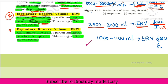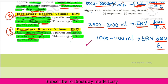Next, expiratory reserve volume (ERV) — this is the same concept but for expiration. During normal expiration you breathe out a certain amount; beyond that, how much more you can forcefully breathe out — that additional volume is called expiratory reserve volume. IRV and ERV are opposites: IRV is for forceful inspiration, ERV is for forceful expiration.